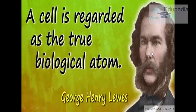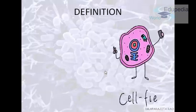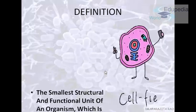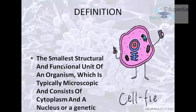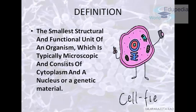Mr. George Henry Lewis said, 'A cell is regarded as the true biological atom.' A cell is defined as the smallest structural and functional unit of an organism, which is typically microscopic and consists of cytoplasm and a nucleus, or genetic material.